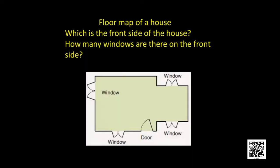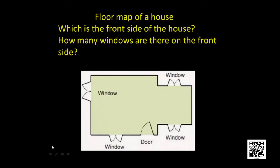So now you can match the items easily. Now see the floor map of a house. In the slide you can see the floor map of a house. When you construct your house, when your father constructs a house, he consults an architect for a layout plan. This is like that. Which is the front side of the house? You see, there is a door here — so obviously this is the front side of the house.